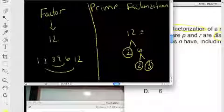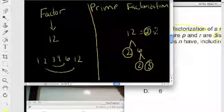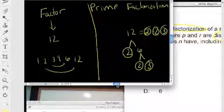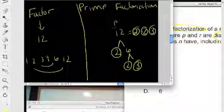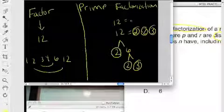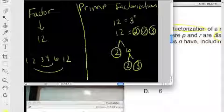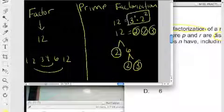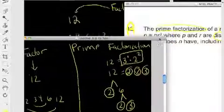In other words, 12 is sort of made up of 2 times 2 times 3. And this we consider to be the prime factorization of 12. I could rewrite 12 as 3 to the first times 2 to the second. This is 12 written in prime factorization form.